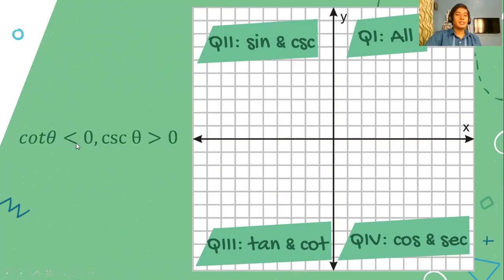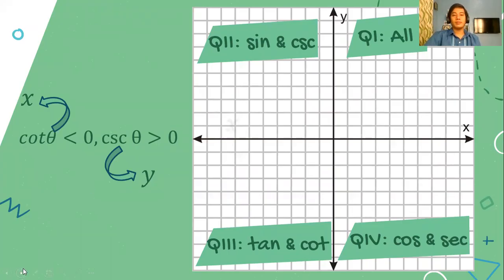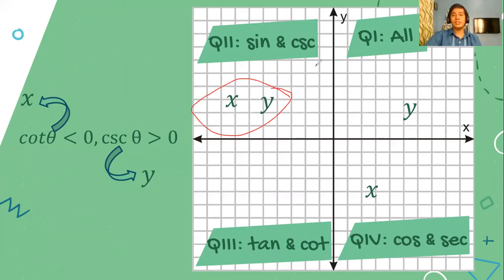What if tangent is negative and cosecant is positive? We have to look for the quadrant in which tangent is negative. Tangent is negative in the second quadrant and also negative on the fourth quadrant. Now for the cosecant function, it is positive on the first quadrant, because all of them are positive there, and it is also positive for the second quadrant. The intersection of these two conditions is quadrant two. Therefore, the correct answer is quadrant two.